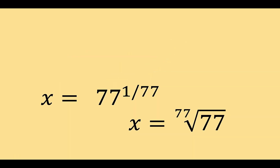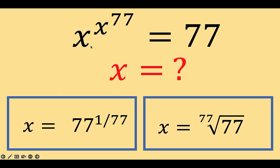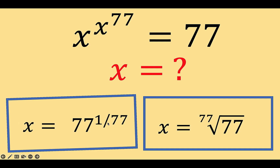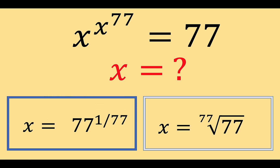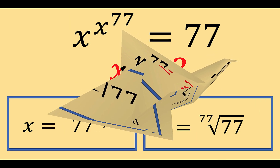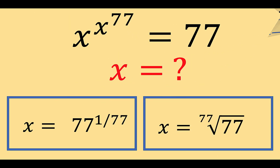Going back to our original equation, x raised to x raised to 77 equals 77. The value of x is the 77th root of 77, which can also be written as 77 raised to 1 over 77. This problem is now solved. Thank you very much, and we hope to see you again in our next video. Bye for now.